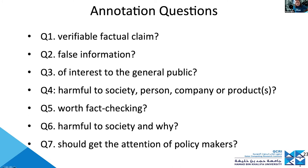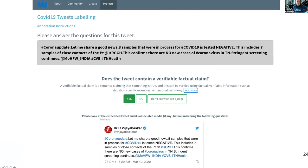All four preceding questions inform the annotation for question number five. These are mostly yes/no questions, or gradual — for example, for fact-checking: urgent, very urgent, no need to check. Questions six and seven have more labels and are about why it is harmful to society and why it should attract policymakers' attention. We have a detailed annotation schema for that.